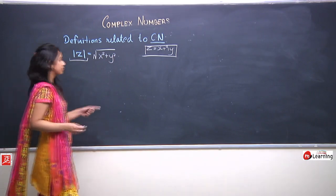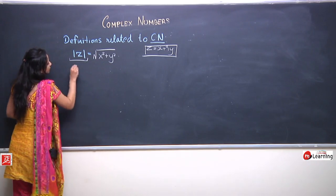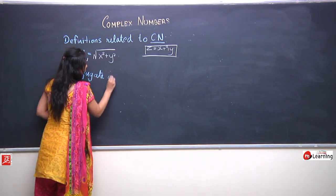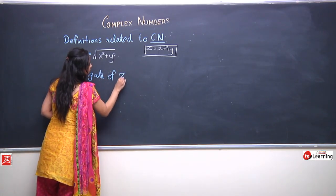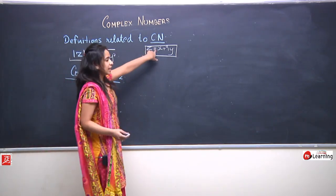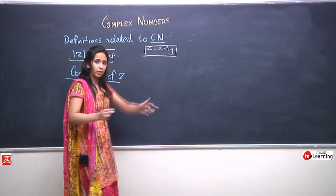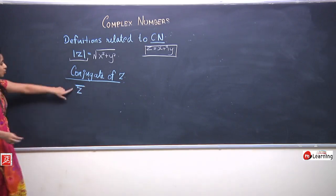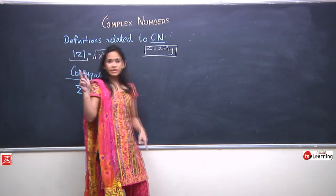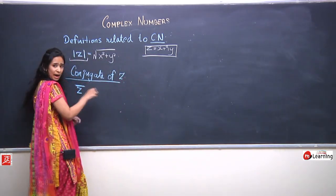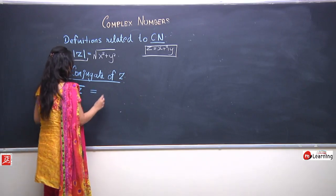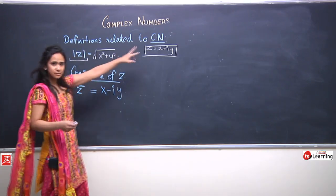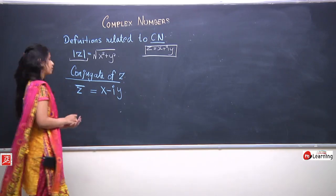Similarly, there is one more term related to complex numbers: the conjugate of z. If z = x + iy, then its conjugate, denoted by z̄ (please do not confuse this bar with a vector arrow — it is just a bar on z), is defined as z̄ = x − iy.